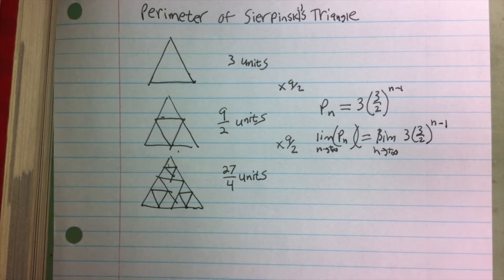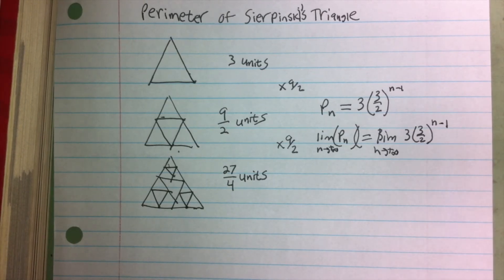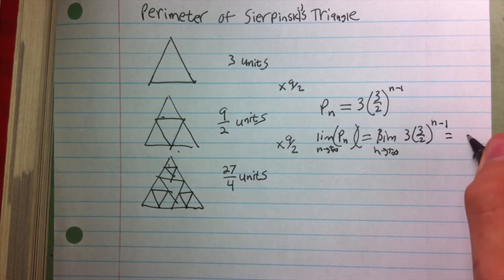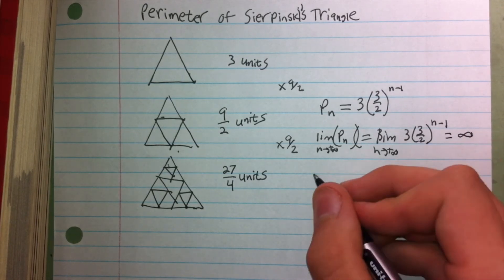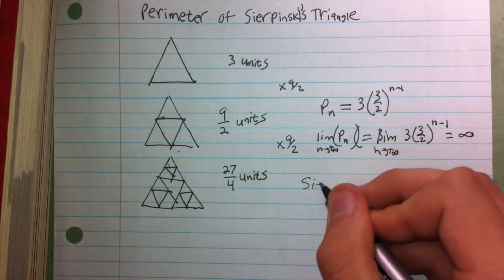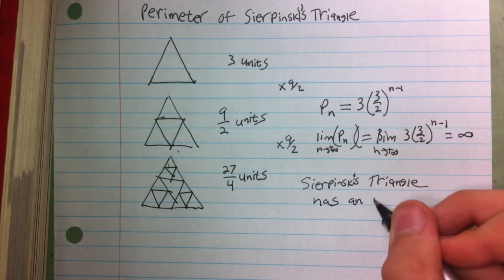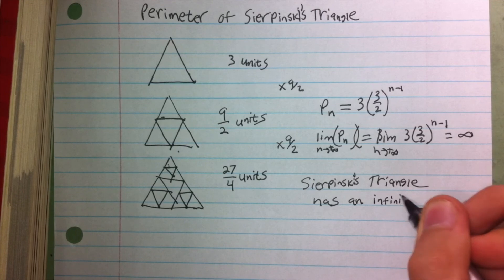And since three halves is greater than one, the limit of three halves as n approaches infinity is going to be infinity, and therefore this is going to be infinity, and therefore Sierpinski's triangle has an infinite perimeter.